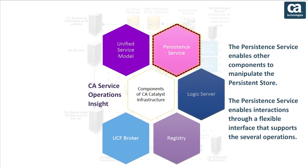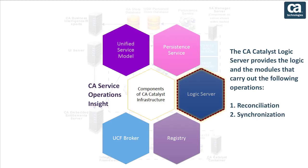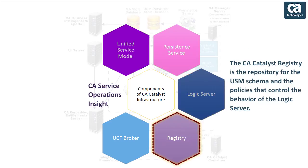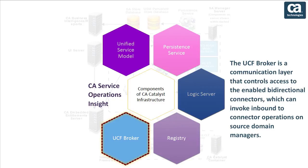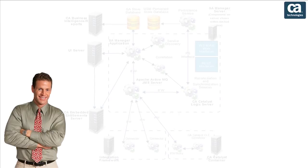The CA Catalyst logic server provides the logic and modules that carry out reconciliation and synchronization operations. The CA Catalyst registry is the repository for the USM schema and the policies that control the behavior of the logic server. The UCF broker is a communication layer that controls access to the enabled bi-directional connectors, which can invoke inbound-to-connector operations on source domain managers.